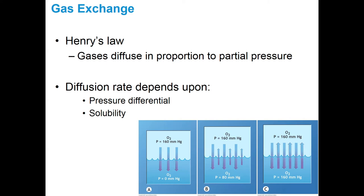The second factor is solubility. Oxygen is not particularly soluble in blood plasma, which is one reason we transport it bound to hemoglobin. Carbon dioxide is more soluble — it enters red blood cells and through a series of chemical reactions ends up as bicarbonate. That's how we transport most carbon dioxide in the blood, though some free CO2 is transported as well.